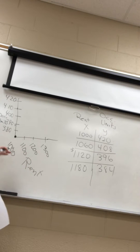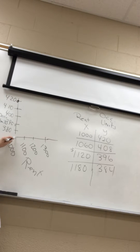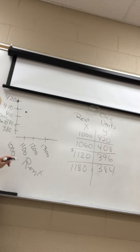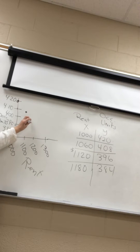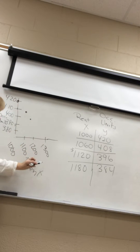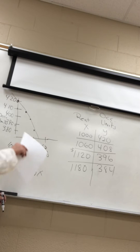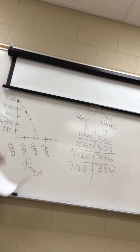So the first coordinate is (1000, 420). The next is (1060, 408) — about right here. Then (1120, 396) — about right there. Then (1180, 384) — right here. You can see it's starting to form a line. It's a linear function — I'm not perfect but the points line up.